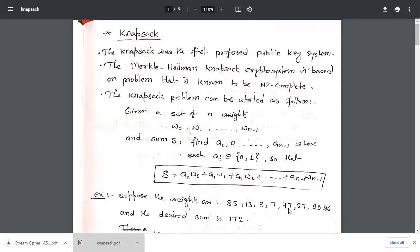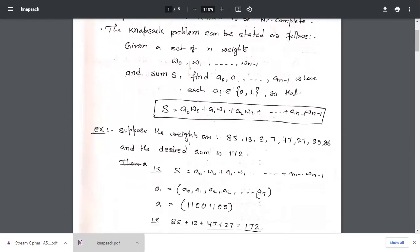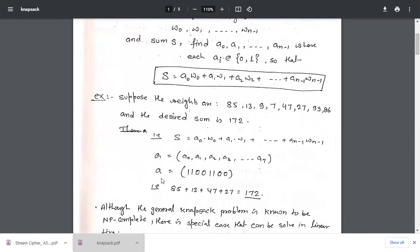We need to calculate a, means what is the series of a. We will simply first write the equation S = a0*w0 + a1*w1. Now we will consider the value of a0, a1 and the given weights, and based on that finally we will calculate a. For this given example, for this sum equal to 172, a is 11001100.